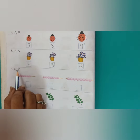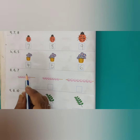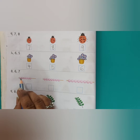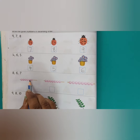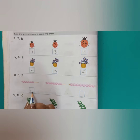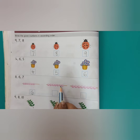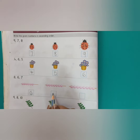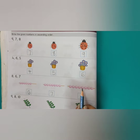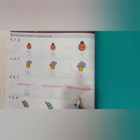फिर 8, 6, 7 — यहाँ पर यह तीन नमबर दिये हैं. तो अभी आप counting करके लिख सकते हो. तो पहले हम counting करेंगे — 1, 2, 3, 4, 5, 6 — तो हम यहाँ पर 6 लिखेंगे. फिर 1, 2, 3, 4, 5, 6, 7 — तो यहाँ पर 7 है तो हम 7 लिखेंगे. फिर 1, 2, 3, 4, 5, 6, 7, 8 — तो यहाँ पर 8 है तो हम 8 लिखेंगे.